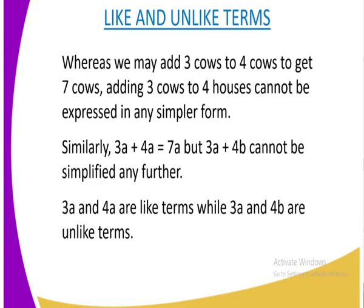Similarly, 3a plus 4a, we can add them to get 7a because they are both a's. But 3a plus 4b cannot be simplified any further, so that only remains that way because we have got unlike terms, that is a and b. So 3a and 4a are like terms while 3a and 4b are unlike terms.